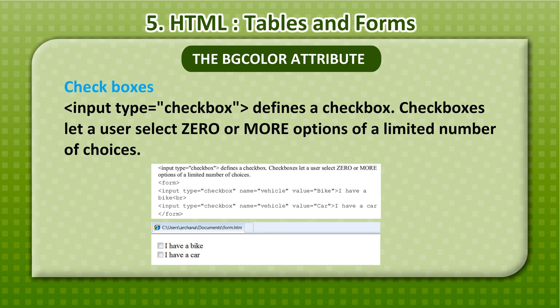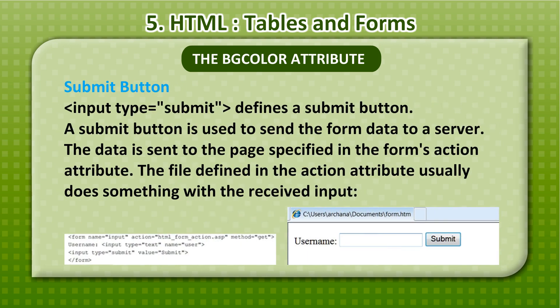Check boxes: input type=checkbox defines a check box. Check boxes let a user select zero or more options of a limited number of choices. Submit button: input type=submit defines a submit button. A submit button is used to send the form data to a server. The data is sent to the page specified in the form's action attribute, and the file defined in the action attribute usually does something with the received input.